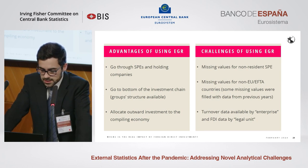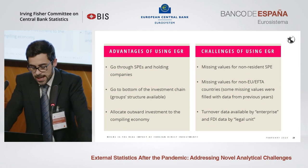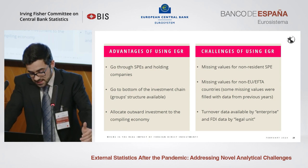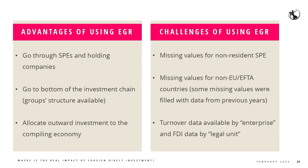Concentrating on the EGR database as an important and useful resource to produce these statistics: its advantages are that it enables us to go through non-resident SPEs and holding companies because we have access to the group structure, allowing us to stop at the first operating unit or go to the bottom of the investment chain. We can also allocate outward investments to the compiling economy for round-tripping cases. Challenges include missing values for the non-resident SPE variable.